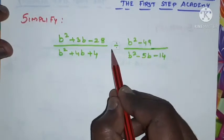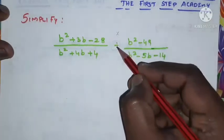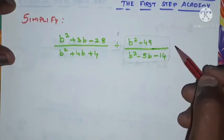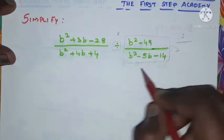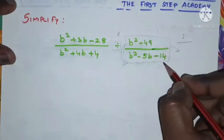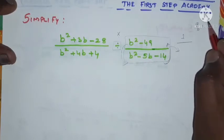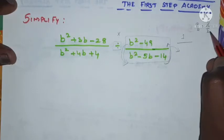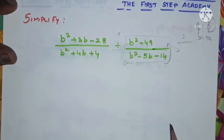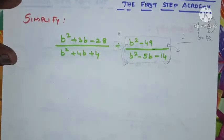We have division as the operator, so we need to convert this division into multiplication to make it easier. When converting from division to multiplication, the particular term will become reciprocal. Reciprocal means 1 divided by the particular term — the numerator becomes denominator and denominator becomes numerator. For example, the reciprocal of a over b is b over a.